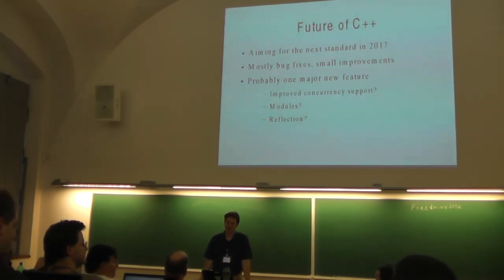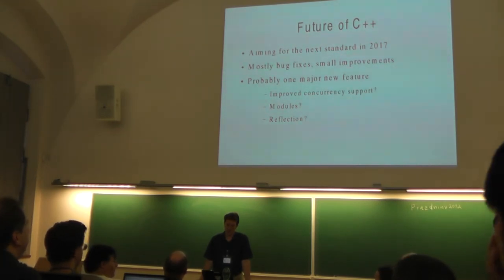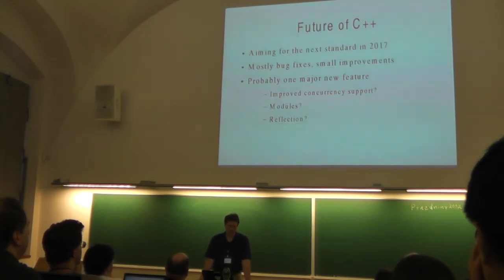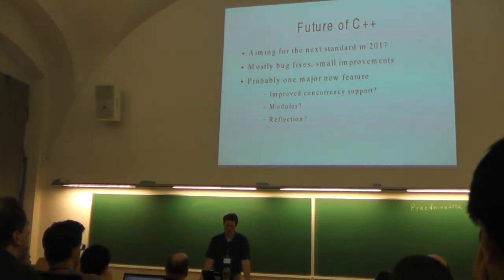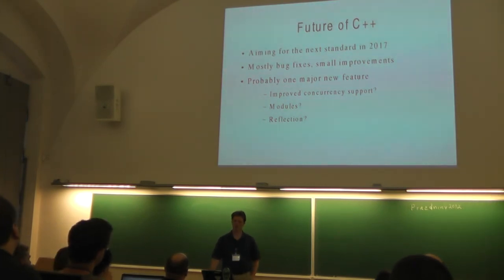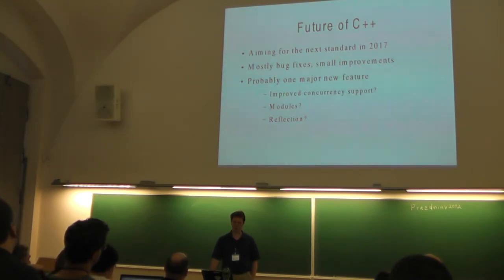How is the implementation of C++11 coming along in GCC? It's coming along pretty fast. Clang also has most everything, though I'm not sure what the current status is. I am aiming to have everything implemented for the full planning.